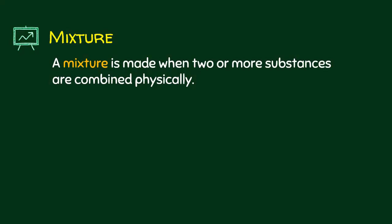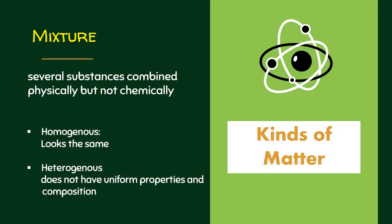What is a mixture? A mixture is made up of two or more substances that are combined physically. Remember: for a substance (compound), you combine them chemically; whereas for a mixture, you just combine two or more substances physically. There are two kinds of mixture: homogeneous and heterogeneous. From the prefix 'homo,' it means they look the same or are uniform in composition. Whereas 'hetero' means they do not have uniform properties and composition.